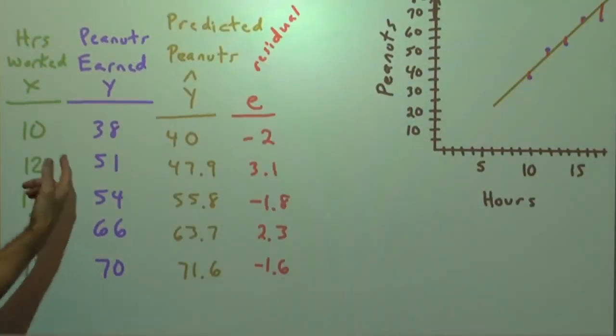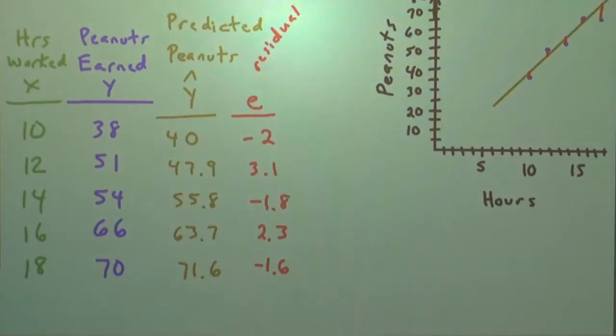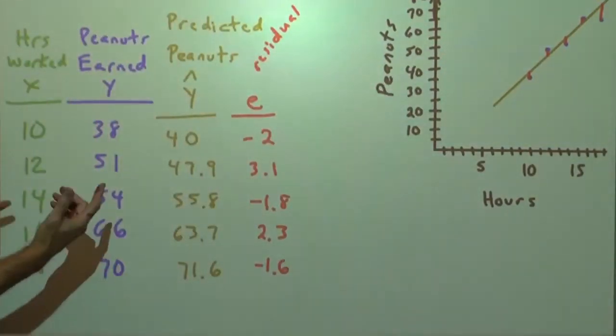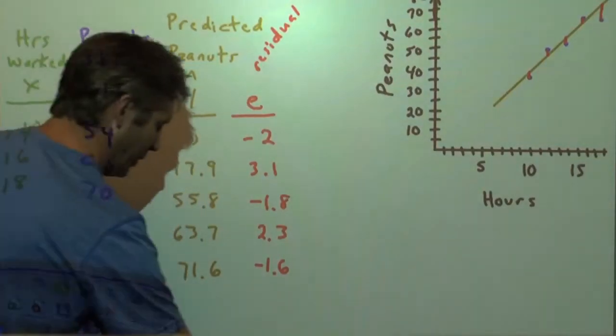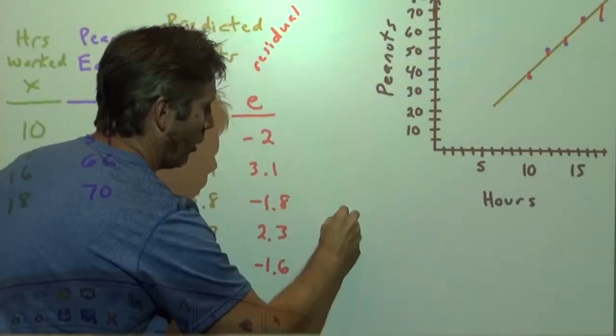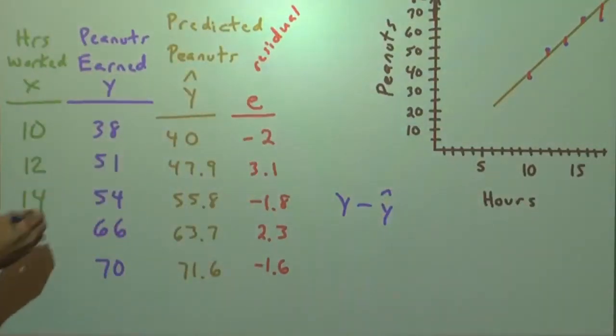Then we decided, after we plug in the values for X and we get our predicted Y from the equation, least-squares regression line, we could say, what is the error amount? How far off are we in our prediction of the Y values? To do that, we do Y minus Y-hat. That's the error amount, and that's called a residual. So a residual is the Y minus the Y-hat. That's how we're going to get these error amounts.